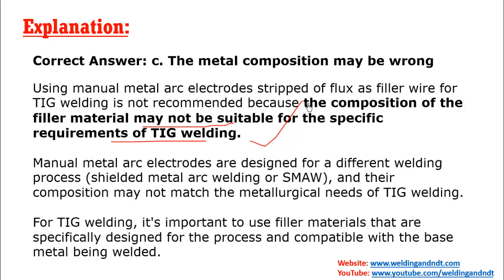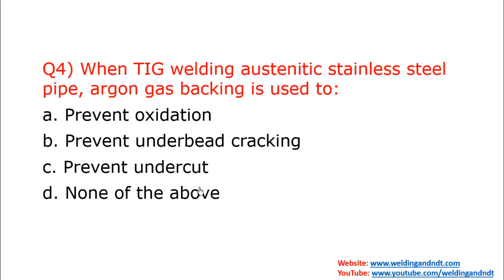It cannot be used. Manual metal arc electrodes are designed for a different welding process — that is, manual metal arc welding or shielded metal arc welding only — not for TIG welding. The composition of the filler metal material may not be suitable for the specific requirements of TIG welding.